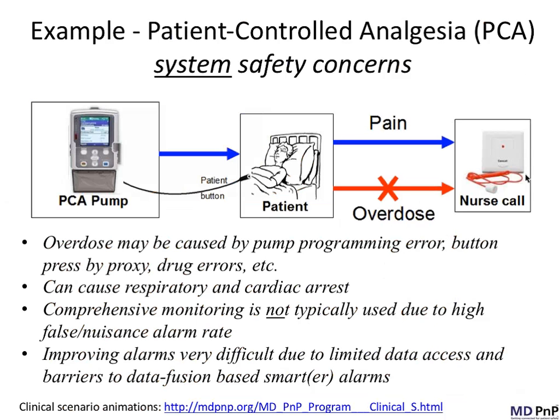As an example use case, consider patient-controlled analgesia, or PCA. Up to six people per day in the U.S. are either seriously injured or killed as a result of mishaps with PCA. The PCA is used to administer a powerful opioid like morphine, which will depress respiration and lead to cardiac arrest if there's an overdose. The patient presses the button to receive a dose, and someone else may press the button for the patient — that's called PCA by proxy — or there could be a drug dosing error. We don't nationally monitor all these patients comprehensively because of the high false alarm rate.